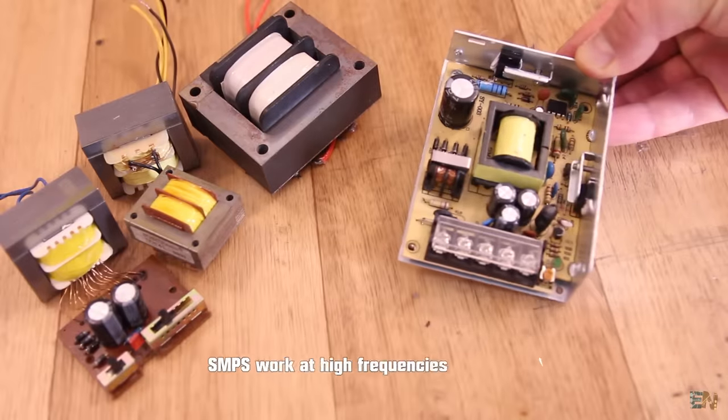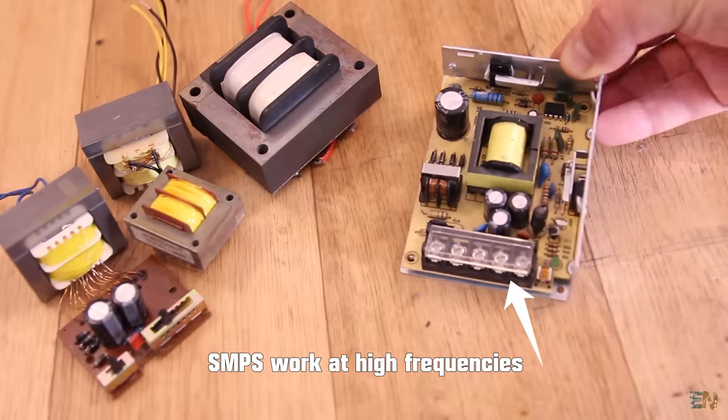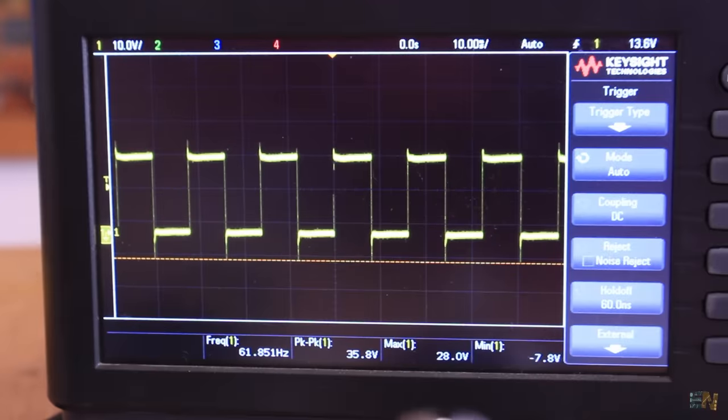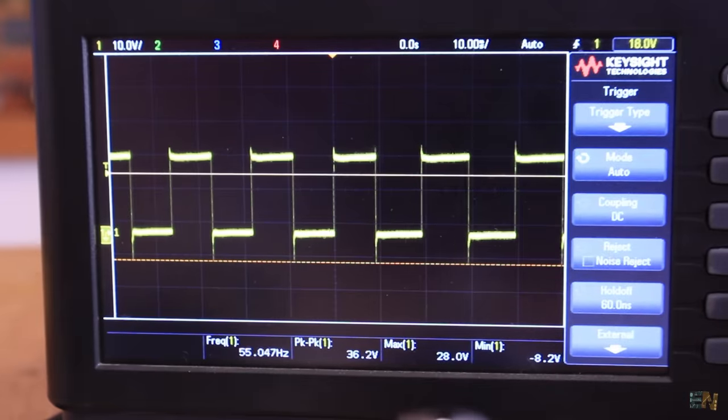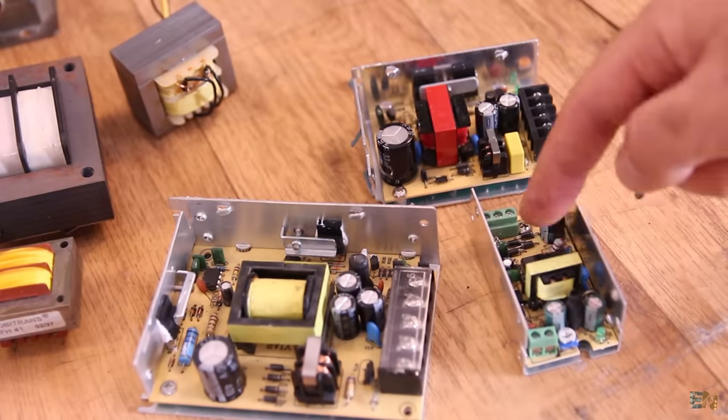On the other side, switch power supplies will work at very high frequencies, higher than 20kHz. Even more, this can work with square signals. Higher frequency square signals will let us work with much smaller transformers, which can weight a lot less.